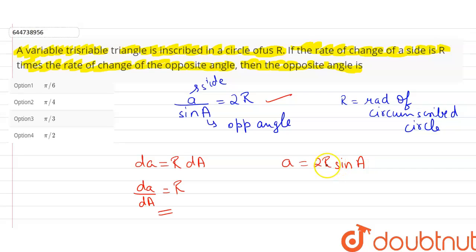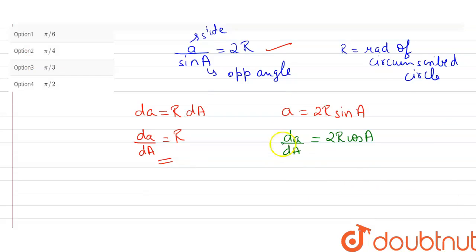Now if we differentiate this equation with respect to A, we get da over dA equals 2R cos A, which is given to us as R.